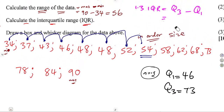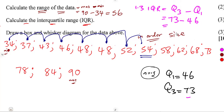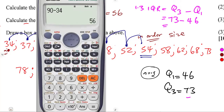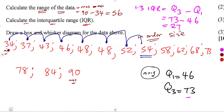The interquartile range is the difference between the upper and lower quartiles: Q3 minus Q1 equals 73 minus 46, which gives us an interquartile range of 27.